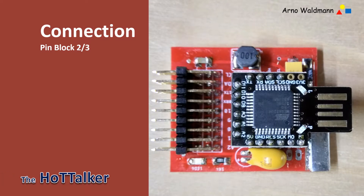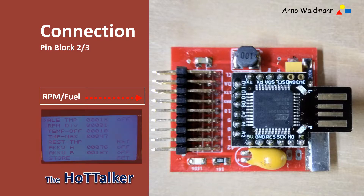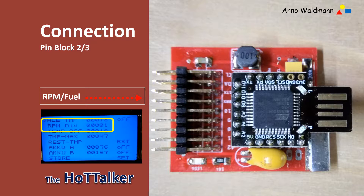At pin blocks 2 and 3, pulse-driven sensors for speed and flow measurement are connected. The exact configuration of the sensors, such as the number of blades or the parameters for the flow calculation, are made on the transmitter in the menu.